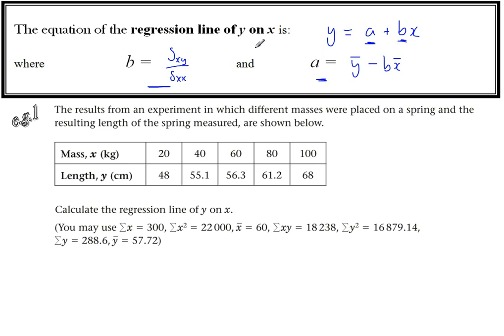A note on vocabulary: the line of y on x — 'on x' means y in terms of x, so it's going to be y equals something. The thing that comes first in that phrase is the thing that comes first in your equation. Now let's look at an example.